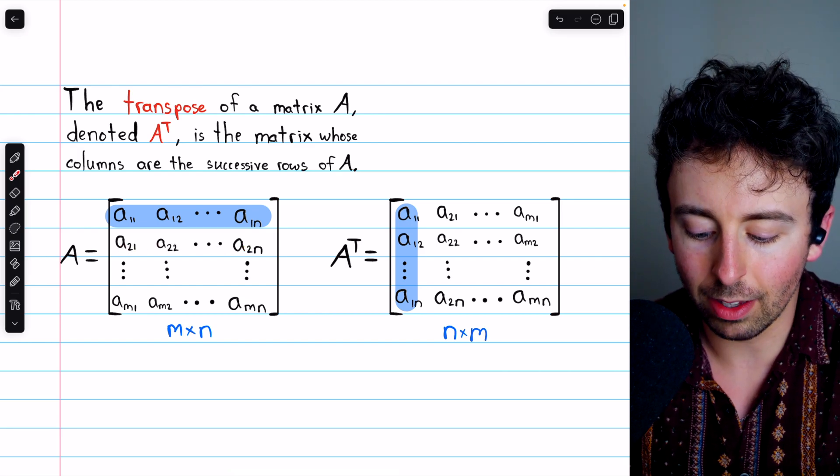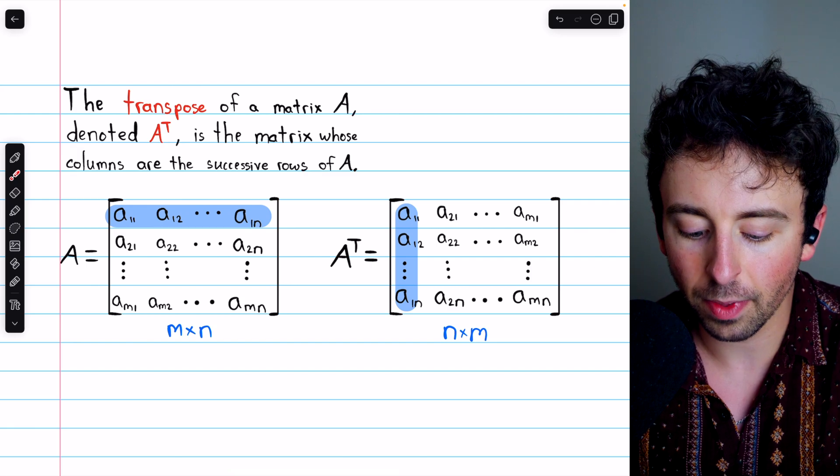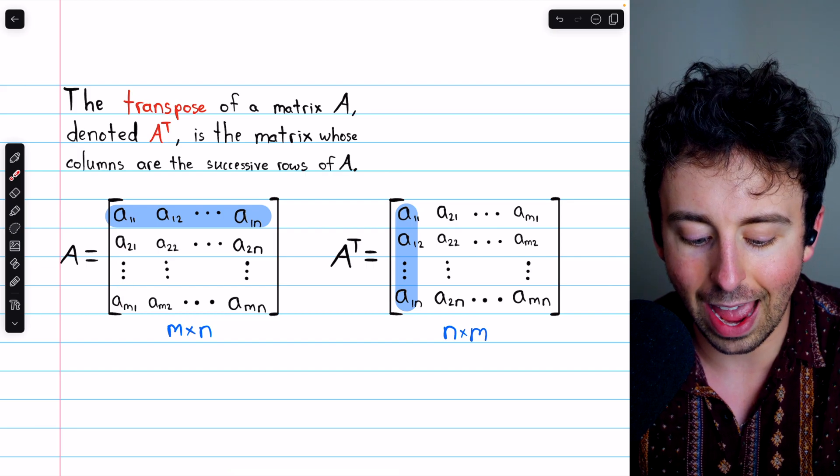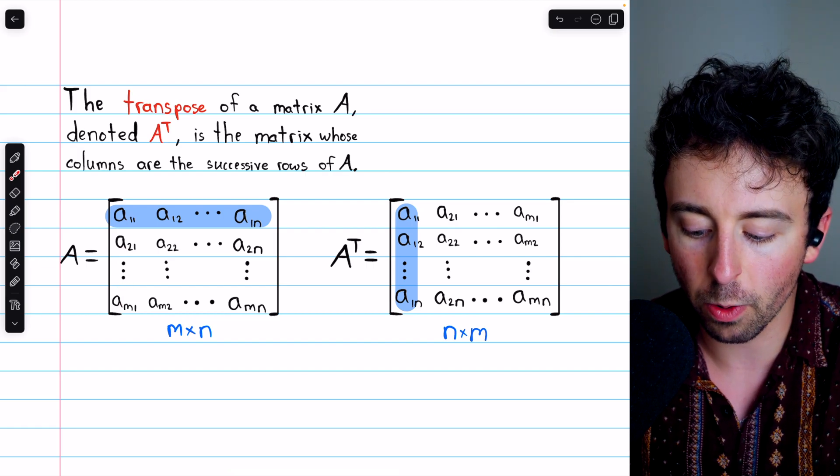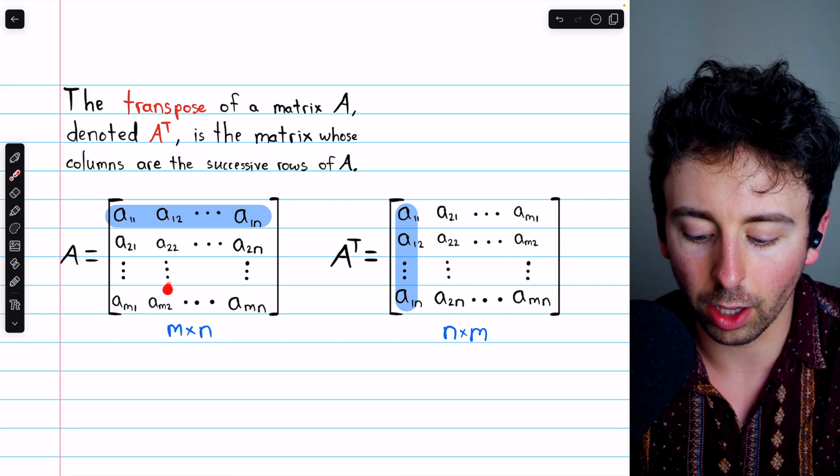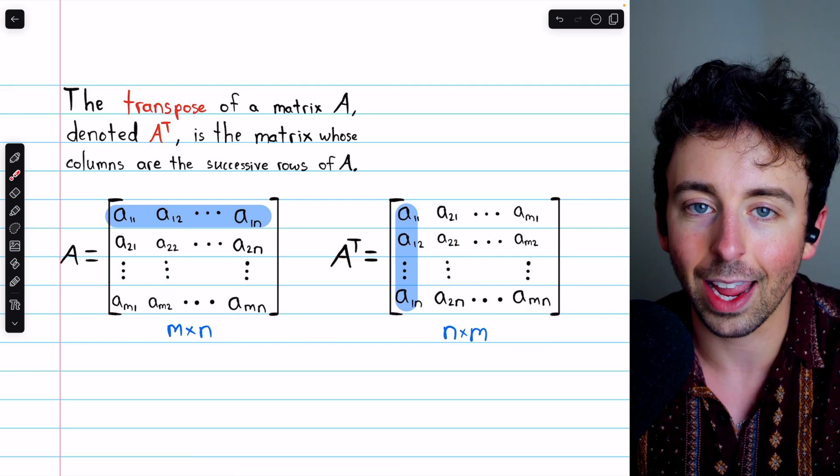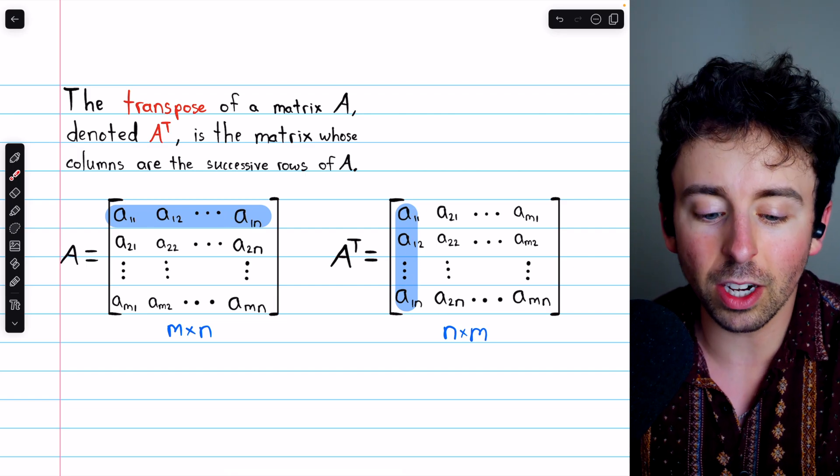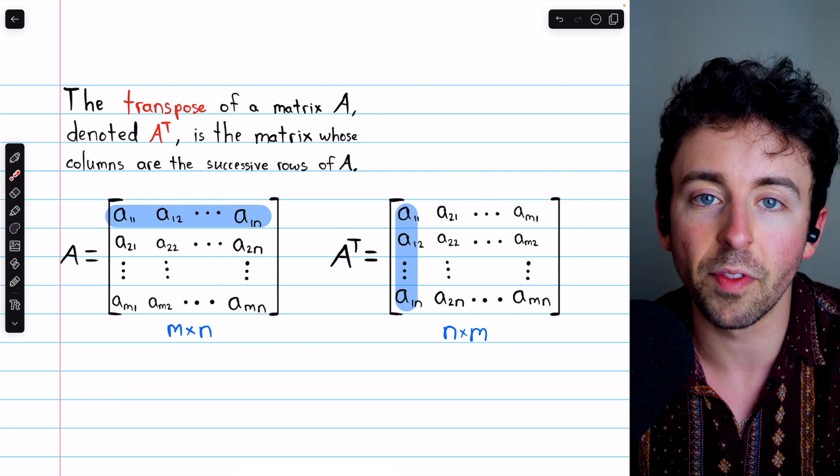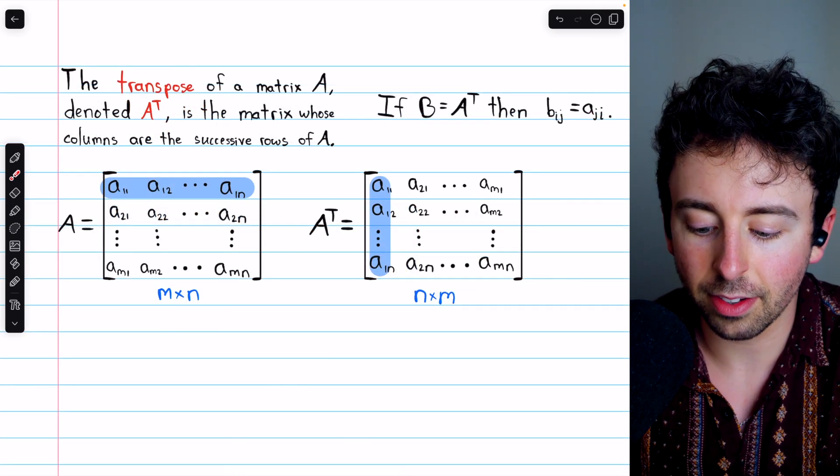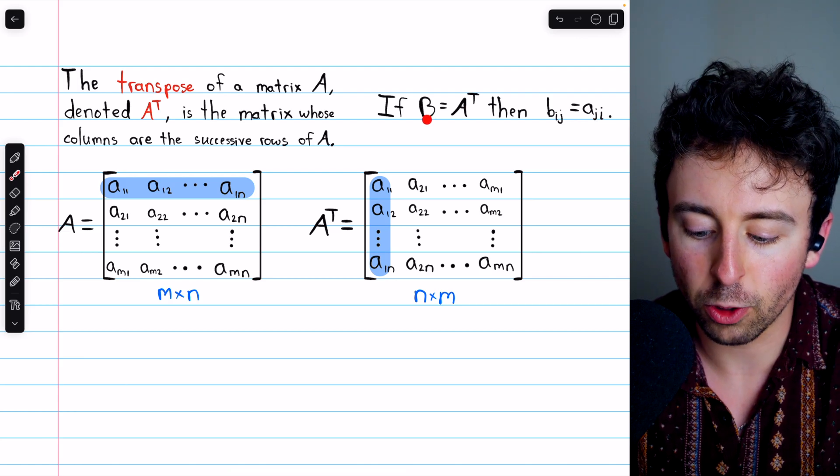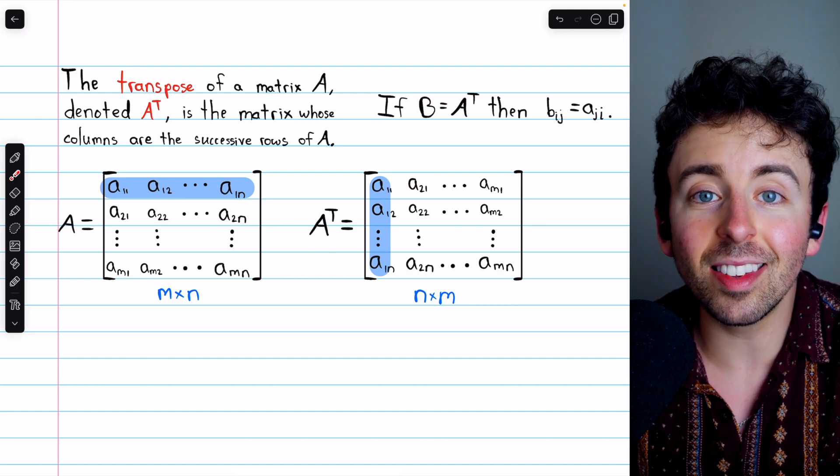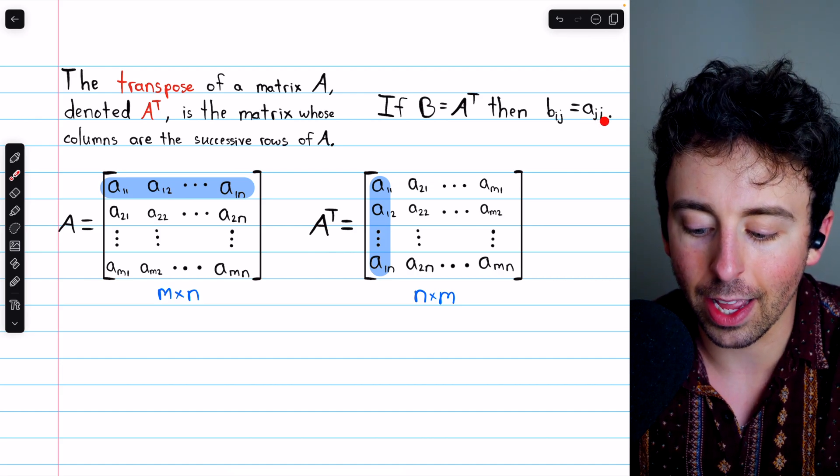You can see how the second row of A is the second column of A transpose. We could also talk about this the other way around. For example, the first column of A is the first row of A transpose. The second column of A is the second row of A transpose. So the rows of A become the columns of A transpose, and the columns of A become the rows of A transpose. You could also think of it like this: if A transpose is a matrix B, then the entry in row i and column j of B is the entry in row j and column i of A.